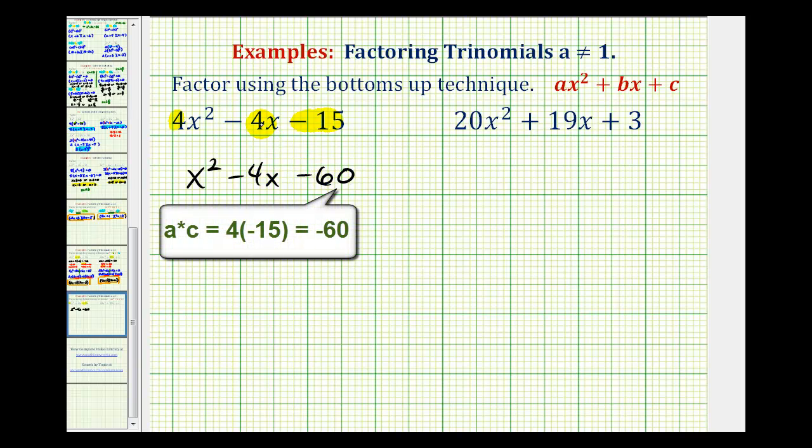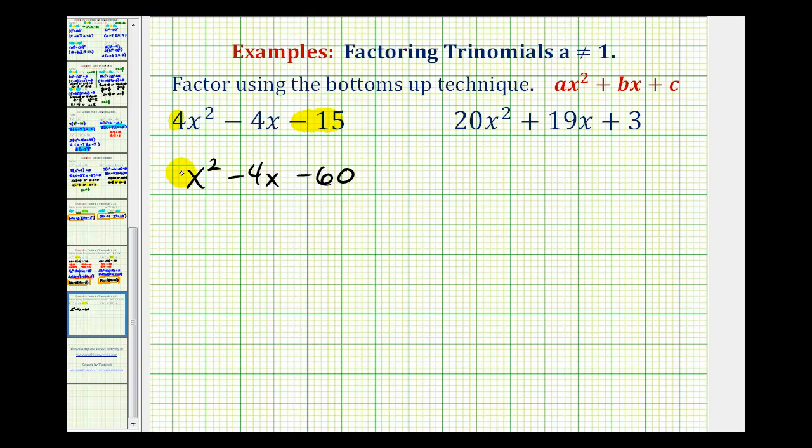Now these two trinomials are not equivalent, but we're going to use this to factor the given trinomial. We'll start by factoring this as we normally would, and since a is equal to one, we'll factor this into two binomials where the first factors will be the factors of x squared, which are x and x. Now we want to find the factors of negative sixty that add to negative four.